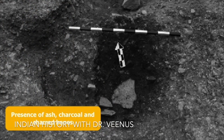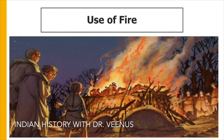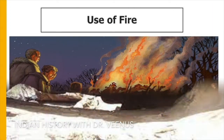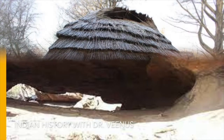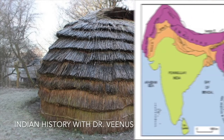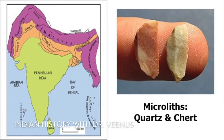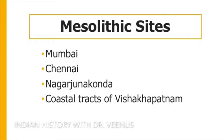The presence of ash, charcoal and charred bones of animals tells us about the use of fire. People mainly lived in caves, but there were also evidences of people living in open-air campsites. In peninsular India, microliths of quartz and chert were found in the vicinity of Mumbai, Chennai, Nagarjunakonda and coastal tracts of Visakhapatnam.